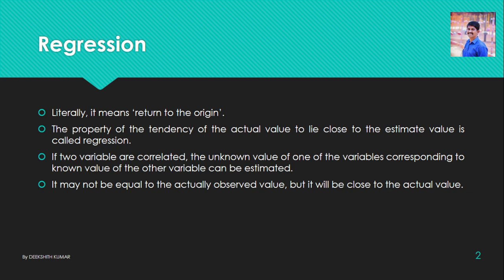The property of the tendency of the actual value to lie close to the estimated value is called regression. That means by using regression, we are going to estimate a value. That value is somewhat closer to the actual value — it is not the actual value, it is somewhat closer to the actual value. The tendency of the actual value to lie close to the estimated value is called regression.